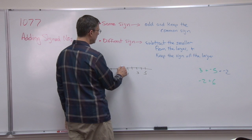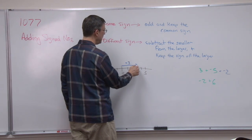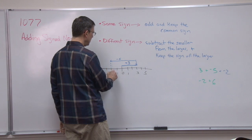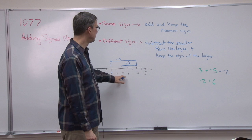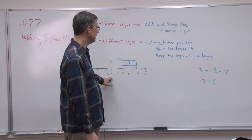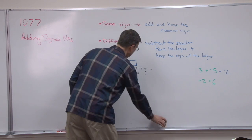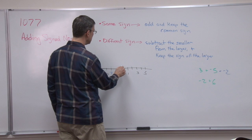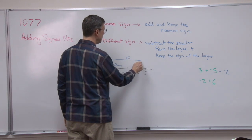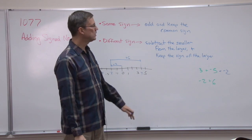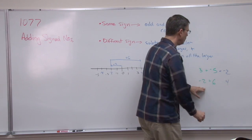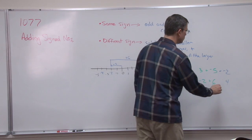Let's see how that works on the number line. Go out to positive three, then go backwards one, two, three, four, five — that's negative five — and look where we land: negative two. So positive three plus negative five equals negative two. Now let's try negative two plus positive six: go negative two, then positive six all the way out, and look where we land — positive four. Applying the rule: six minus two is four; six was the larger and it was positive, so the answer is positive four.